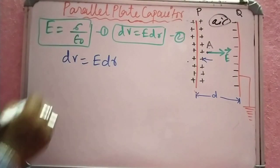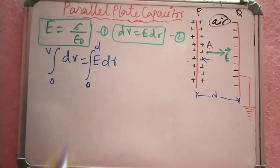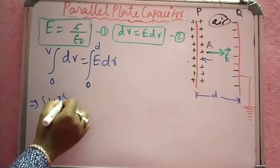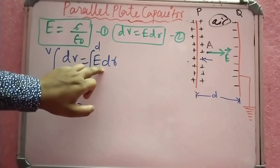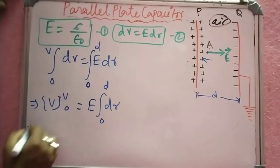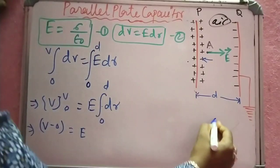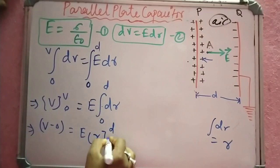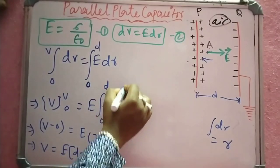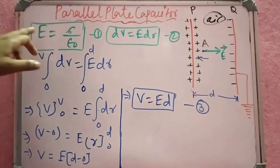So the equation is dV equals E dr. Integrating both sides, the left side integrates from 0 to V, and the right side integrates from 0 to d (the distance between the plates). Therefore V minus 0 equals E into d, giving us V equals E into d, which is equation number 3.